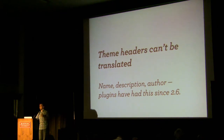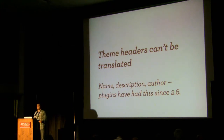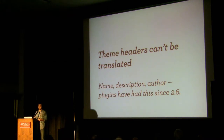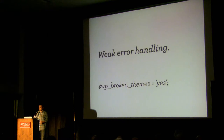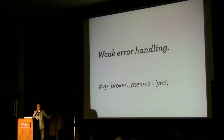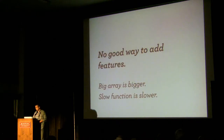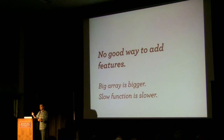The theme headers — the name, description, author — can't actually be translated. More than a third of all WordPress users are using WordPress in a language other than English, and there's a lot we can do to help our international user base. There was also really bad error handling — if I wanted to figure out if a theme was properly formed or something was broken, I really couldn't. And there was no good way to add more features: adding a feature would return one more item in an array, meaning more data and slower performance.